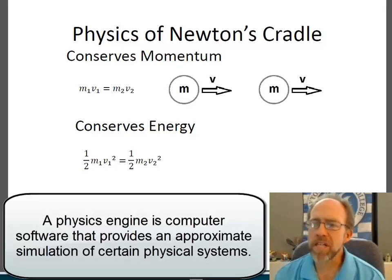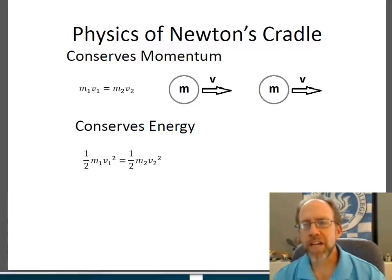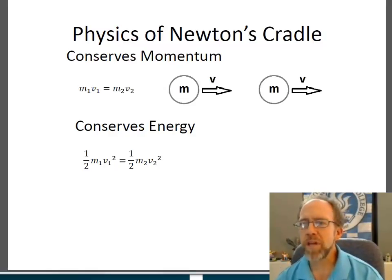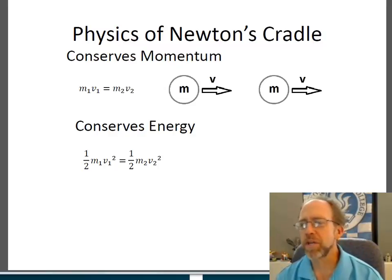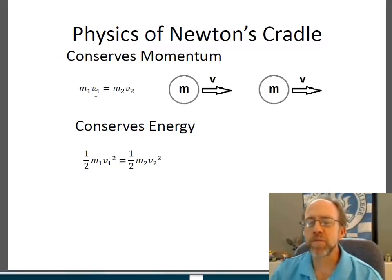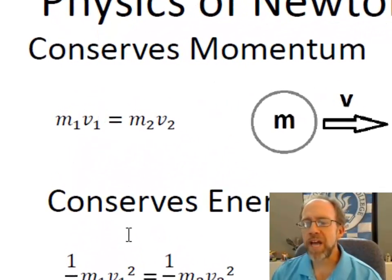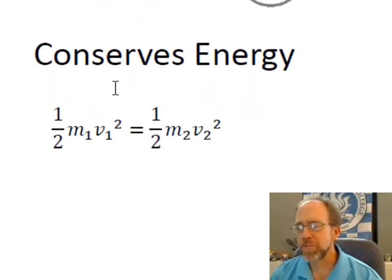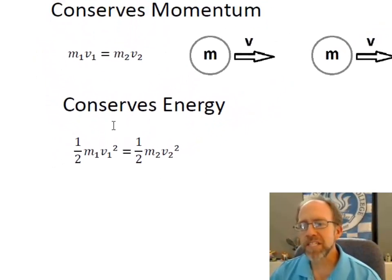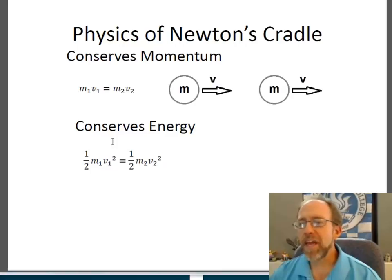In Newton's Cradle, we've got a couple of straightforward laws of physics. The first one is conservation of momentum: mass 1 times velocity 1 equals mass 2 times velocity 2. Velocity is a vector in the real world, and often in simulation as well, though you can simplify it to a scalar. And conservation of energy — that's the kinetic energy equation, one half mv squared. When those balls are moving fast and about to hit another ball, they've got a velocity and a mass, and energy needs to be conserved.